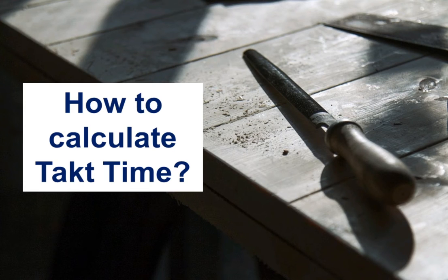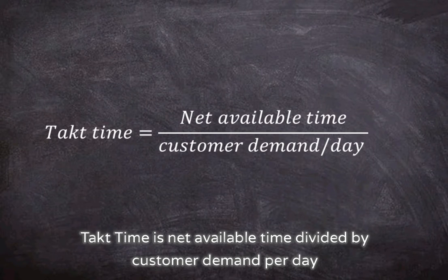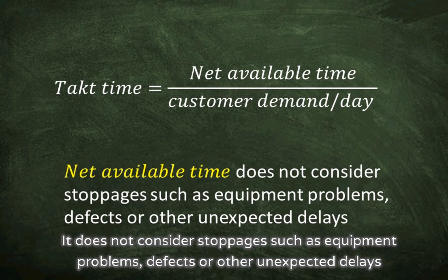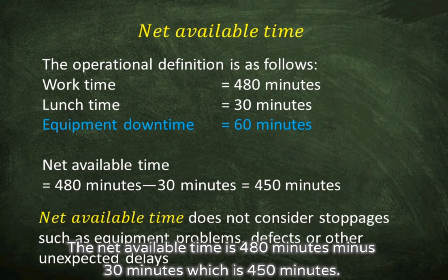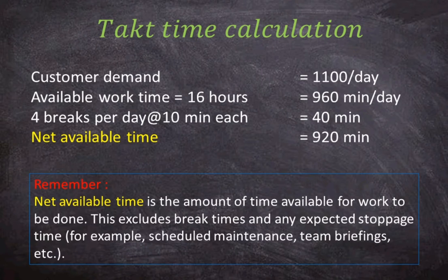How to calculate tack time? Tack time is net available time divided by customer demand per day. It does not consider stoppages such as equipment problems, defects, or other unexpected delays, and it does not consider equipment downtime. For example, customers' demand is 1,100 complex circuit boards per day, and a manufacturing plant operates 16 hours per day, which equals 960 minutes per day, with 4 breaks per day of 10 minutes each. The calculation of net available time shall exclude break time, giving a final net available time of 920 minutes.